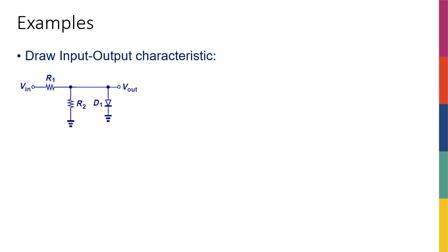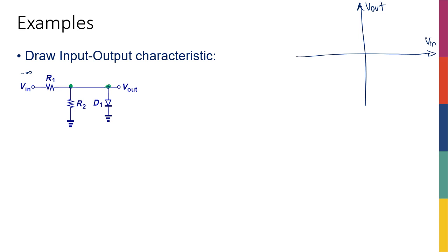Let's solve another example where input-output characteristics are asked. The circuit has Vin, Vout, two resistors, and a diode. Starting the same way, I draw the Vin–Vout plot and assume Vin is at negative infinity. At negative infinity, every node in the circuit has a voltage between negative infinity and zero, so this point and every other point has a negative voltage — therefore D1 is off.